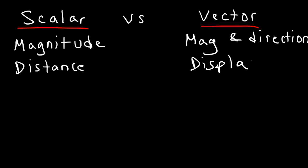Displacement is a vector quantity. Because direction is part of displacement. Whereas distance, it's a scalar quantity.